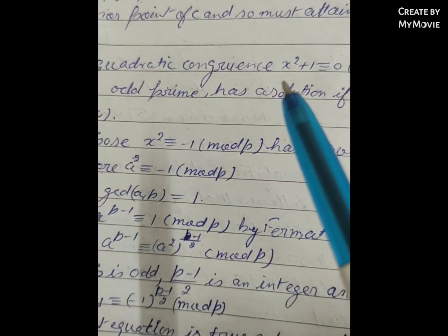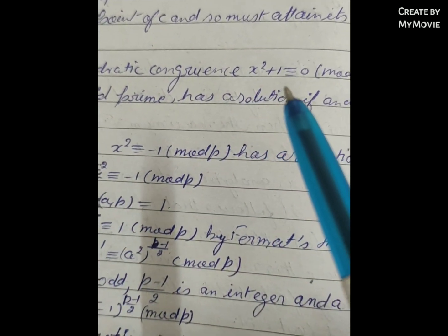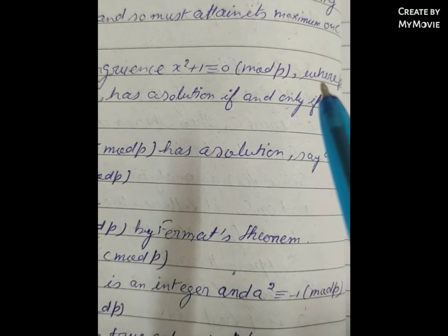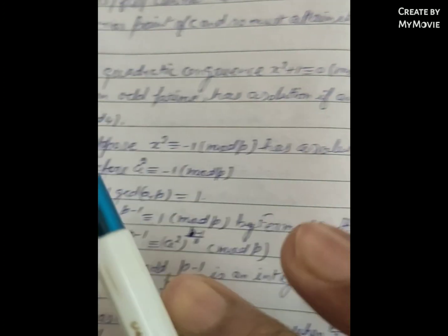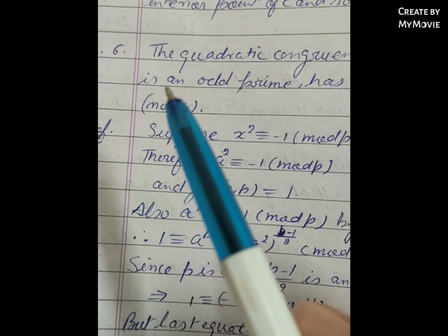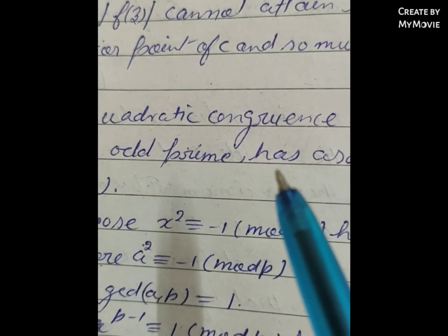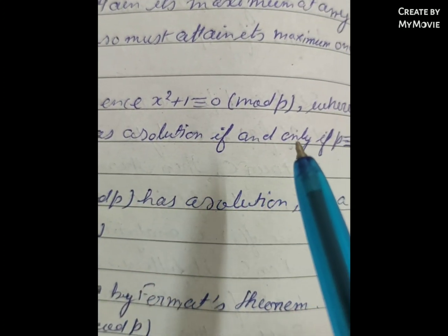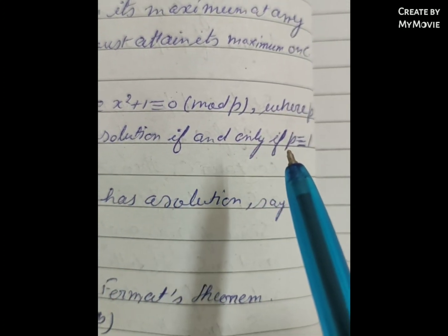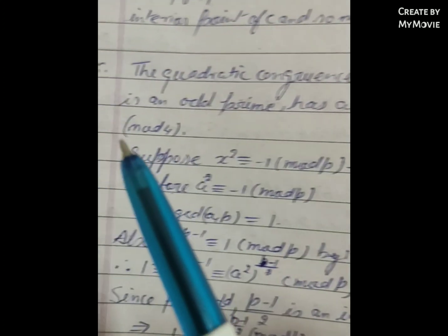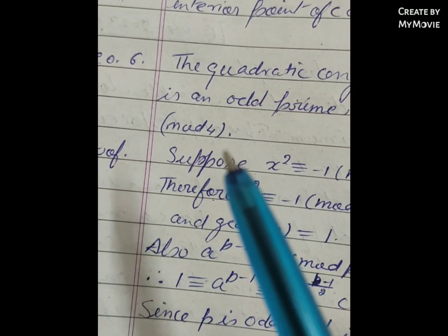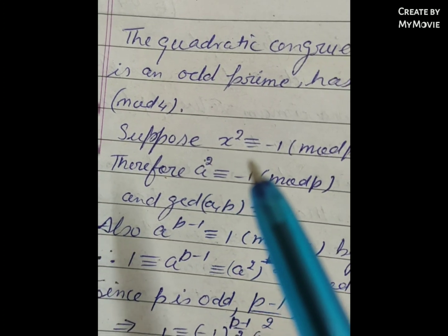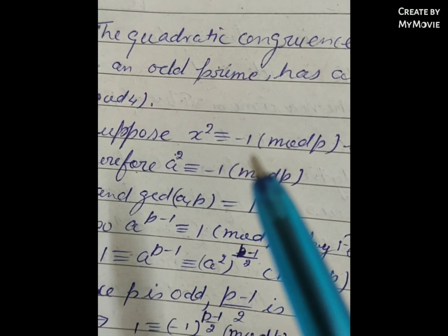The quadratic congruence x² ≡ -1 (mod p), where p is an odd prime, has a solution if and only if p ≡ 1 (mod 4). Proof: suppose that x² ≡ -1 (mod p) has a solution.